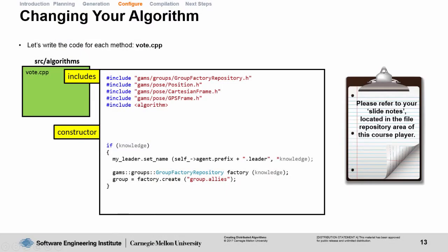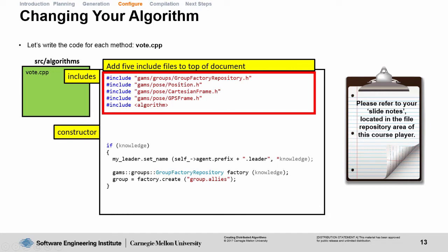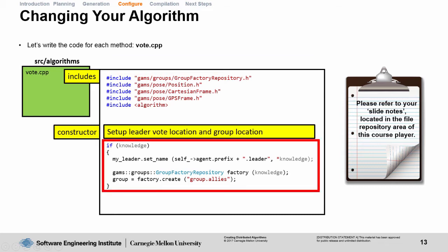Now that we're done with setting up the vote header file, let's look into implementing what needs to be done in the vote.cpp file. First, we're going to add five new includes to the top of the document. This includes the group factory repository class, the position class, and the Cartesian frame and GPS frame classes. Next, in the constructor class for vote, we're going to add some initialization code for our myLeader string container, as well as setting up the group factory repository to point to group.allies.